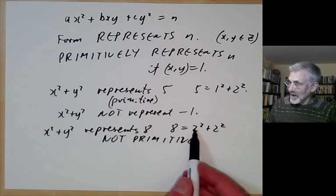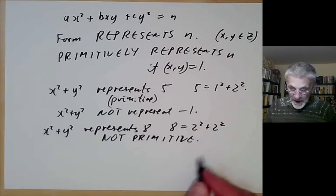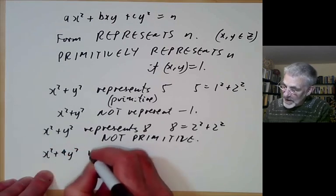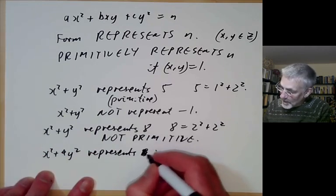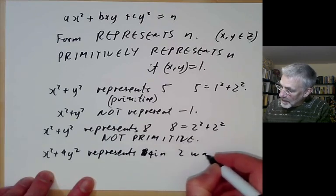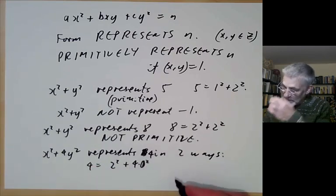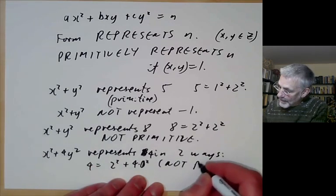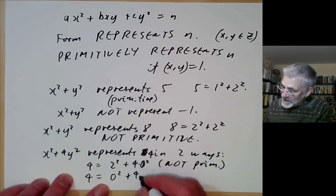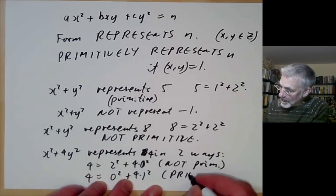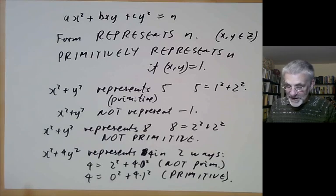In fact, there's no way for x squared plus y squared to represent 8 primitively — if you write 8 as the sum of two squares, both squares must be 4. The form x squared plus 4y squared also represents 4 in two ways: 4 equals 2 squared plus 4 times 0 squared, which is not primitive since 2 and 0 are not co-prime; and 4 equals 0 squared plus 4 times 1 squared, which is primitive. So the same number can be represented both primitively and imprimitively.